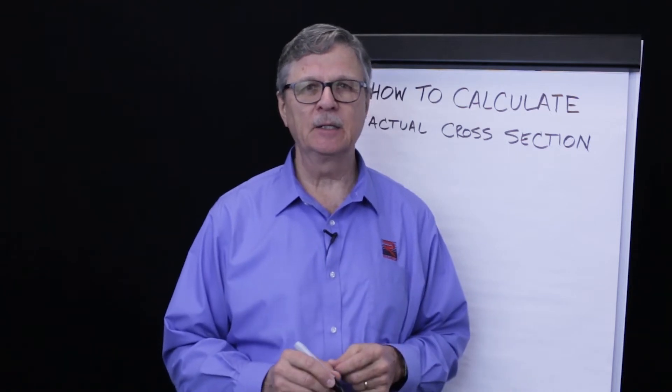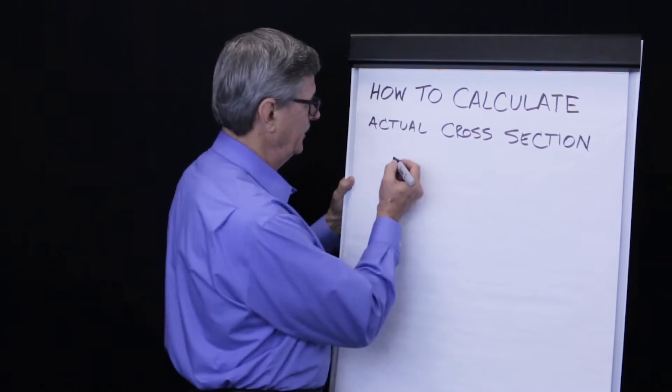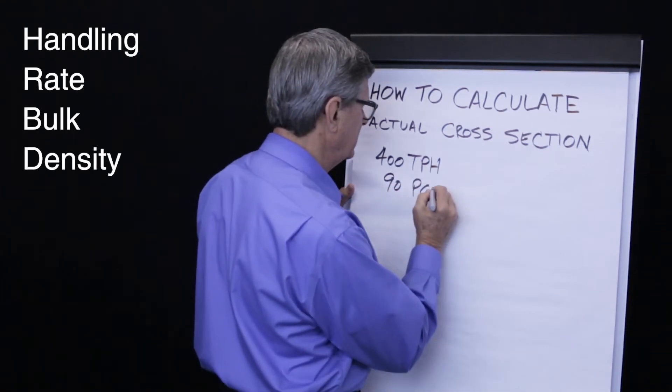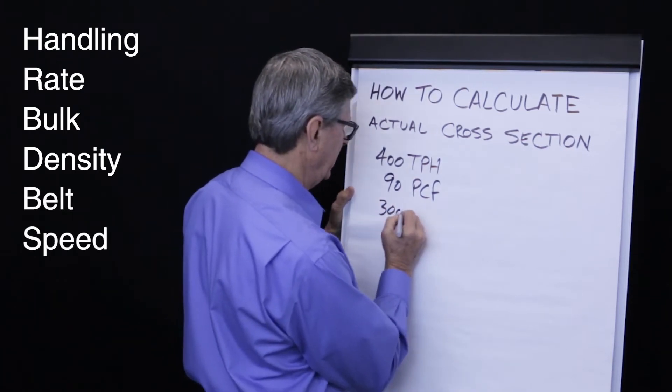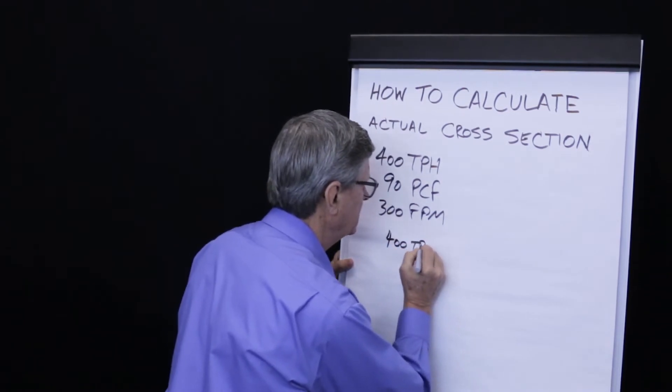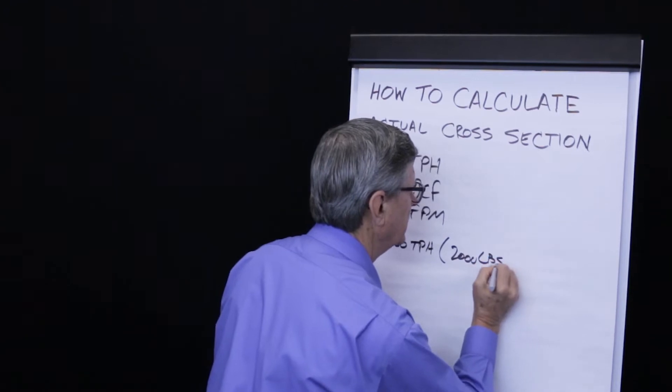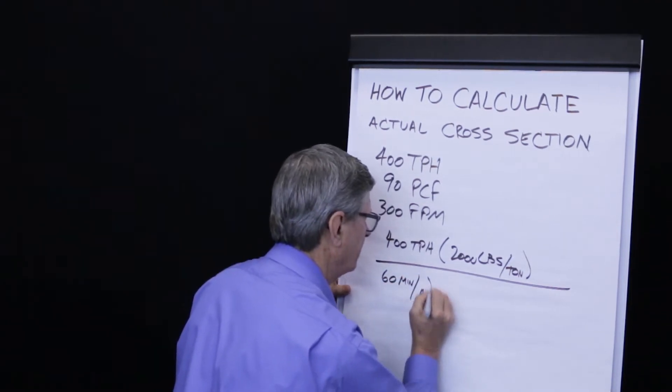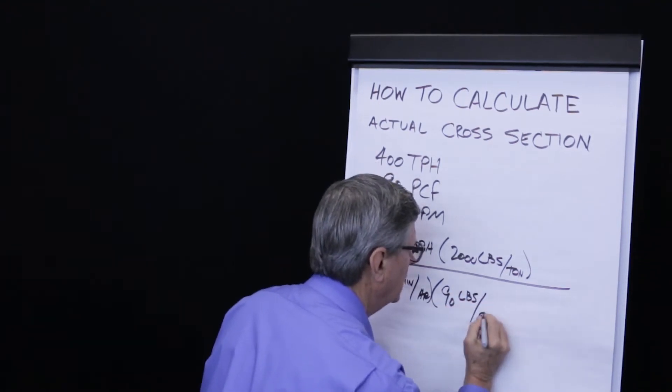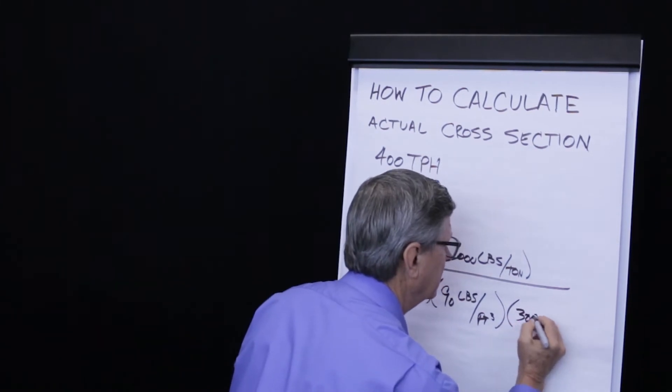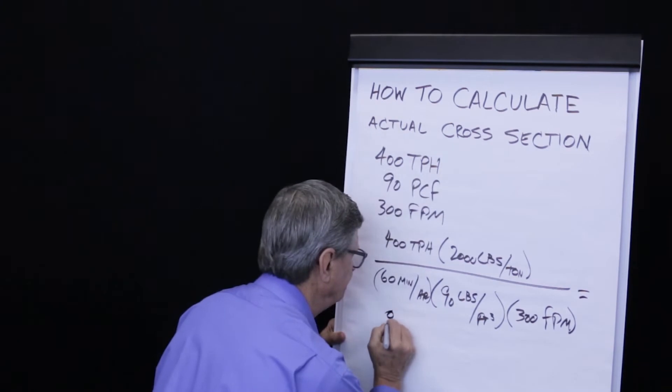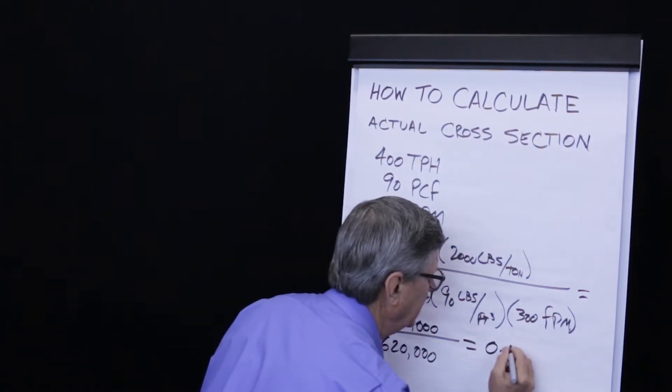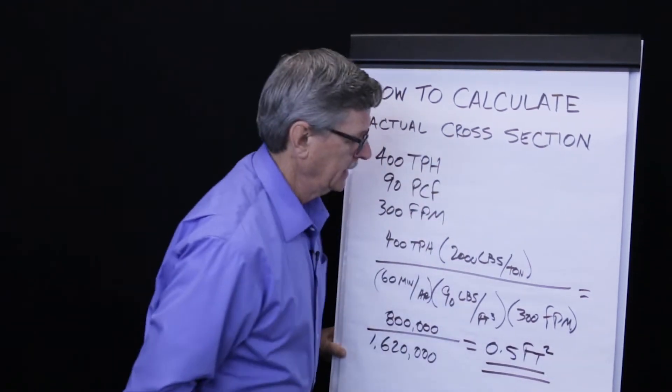How do we calculate actual design cross section? Let's say for this example, we're going to be considering that our material has a handling rate of 400 tons per hour. It's stone, so our bulk density is 90 pounds per cubic foot, and the belt speed is 300 feet per minute. 400 tons per hour times 2,000 pounds per ton divided by 60 minutes per hour times 90 pounds per cubic foot times 300 feet per minute gives us 800,000 divided by 1,620, which equals one half of a square foot.